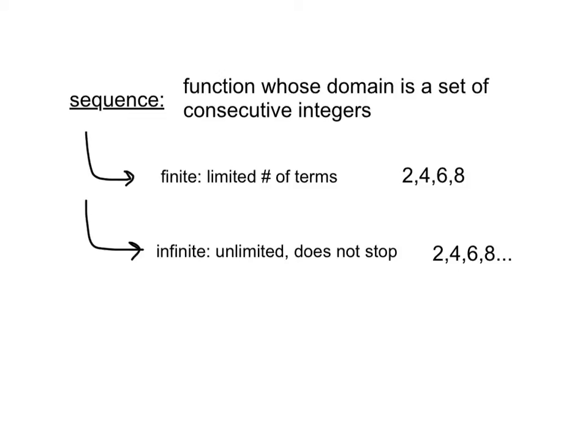Now, an infinite sequence has an unlimited number of terms and does not stop, so 2, 4, 6, 8, dot, dot, dot.